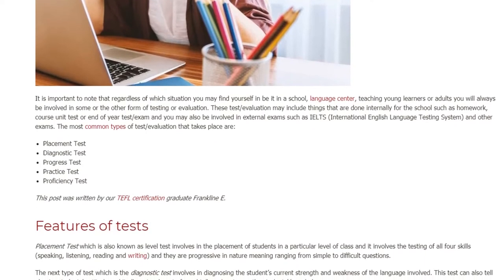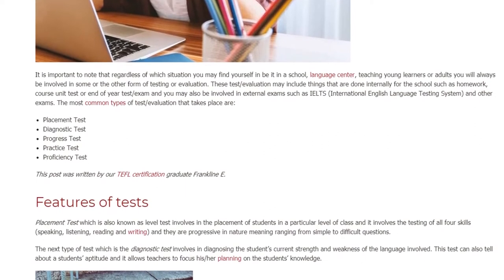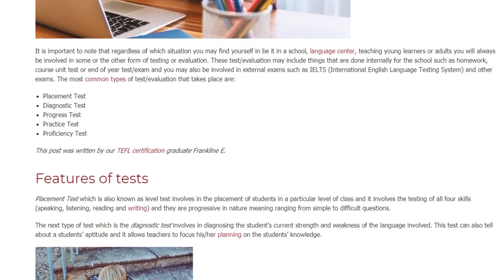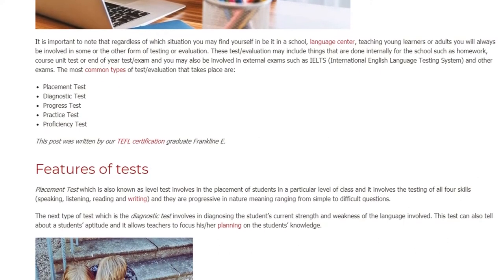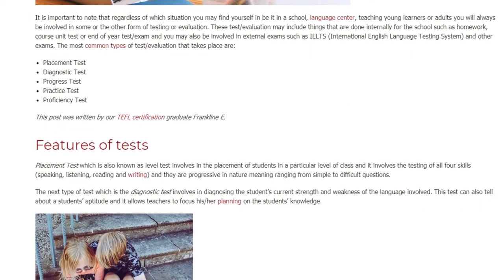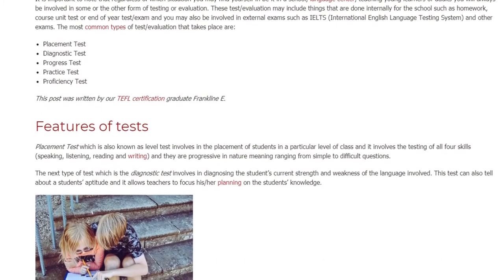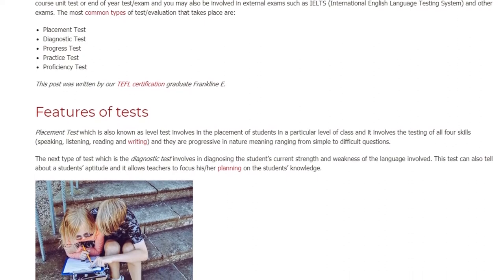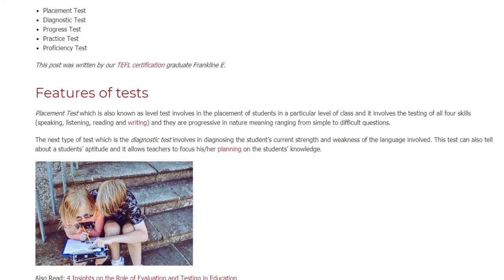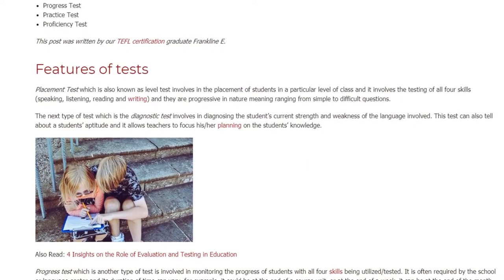The most common types of evaluation that take place are: placement test, diagnostic test, progress test, practice test, and proficiency test. A placement test — also known as a level test — involves placing students in a particular level or class. It involves the testing of all four skills: speaking, listening, reading, and writing, and the questions are progressive in nature, ranging from simple to difficult.